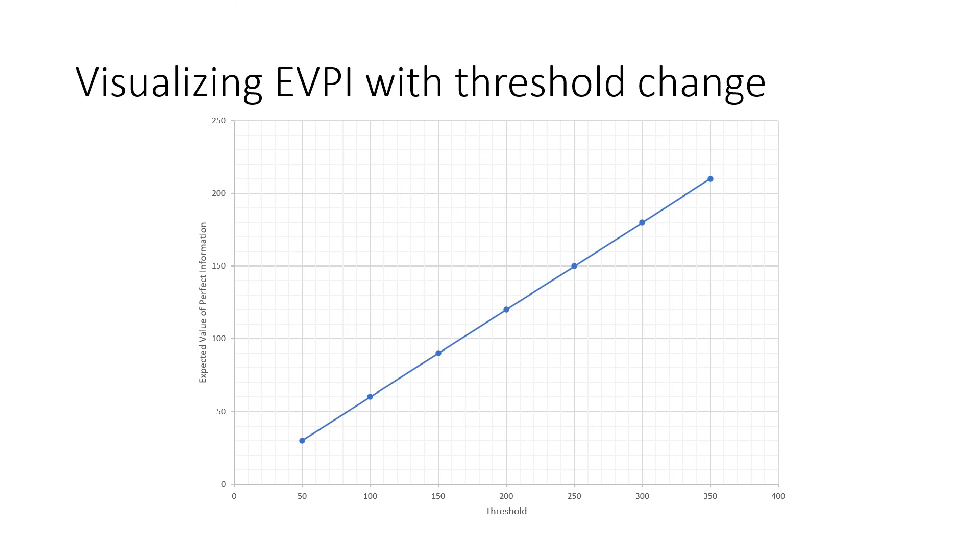But as it stands, the expected value of perfect information calculation is really just a linear calculation. We're defining the difference of two linear equations or two values. So as it stands, no kinks are happening. We'll see in a later video what it means when we have kinks, but right now, we should just get this straight line.